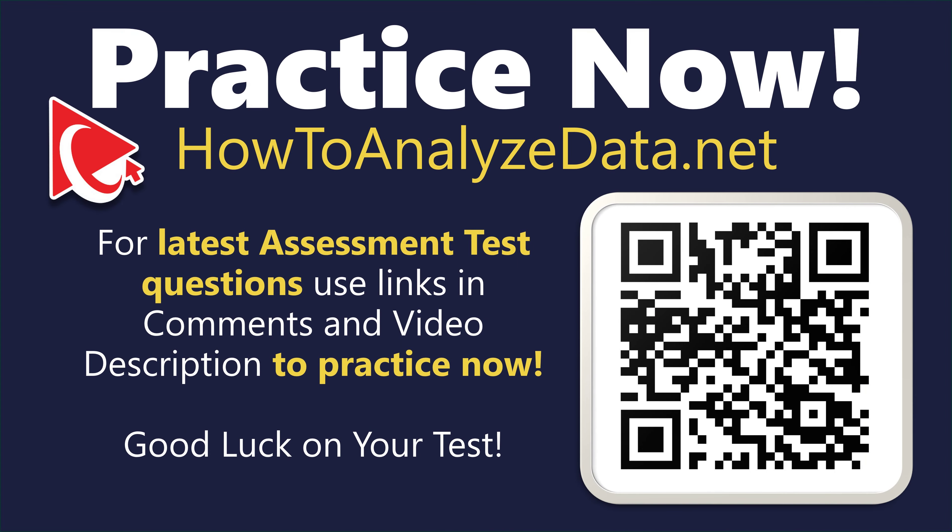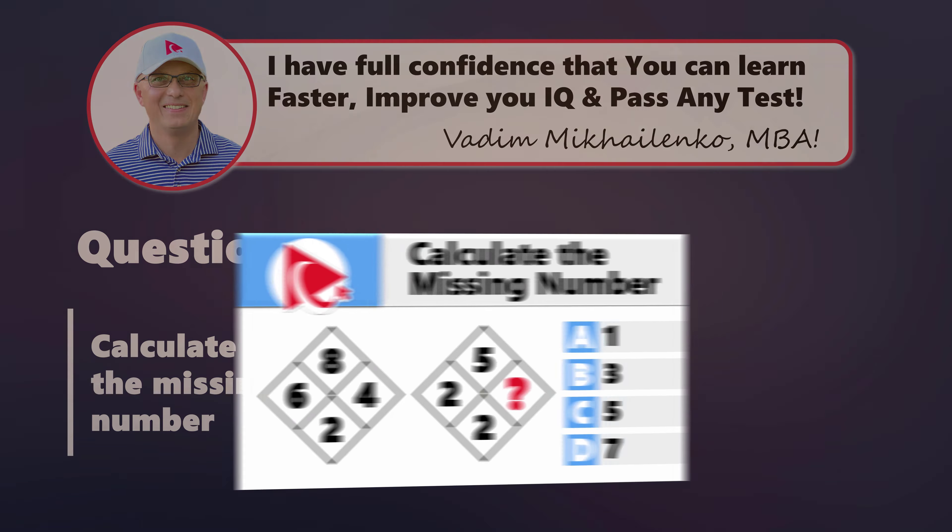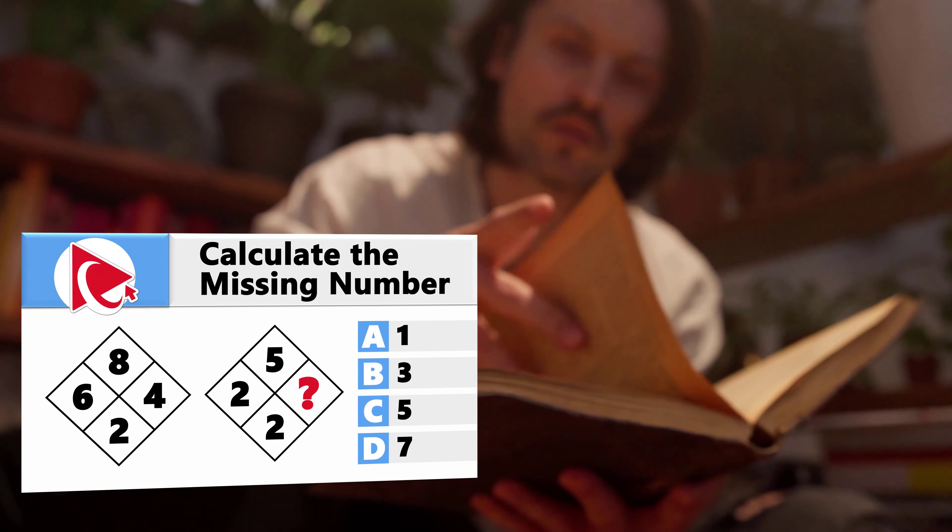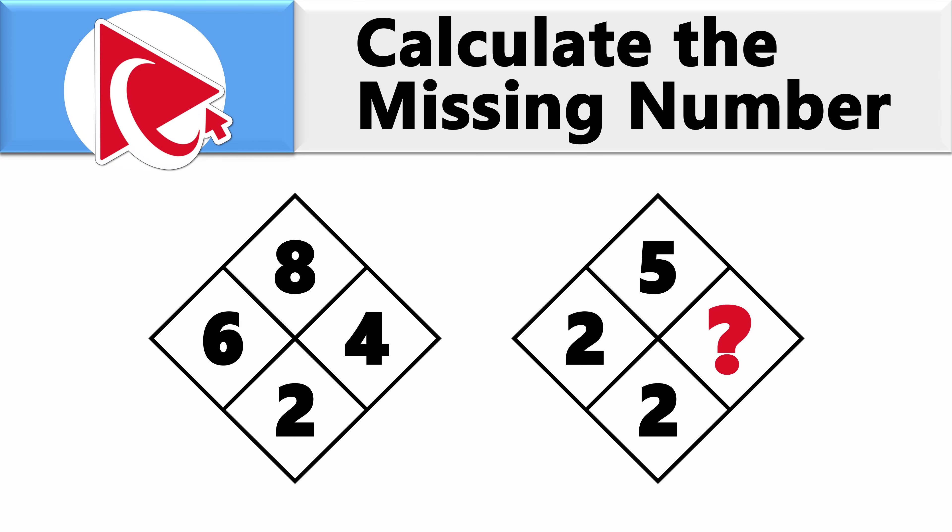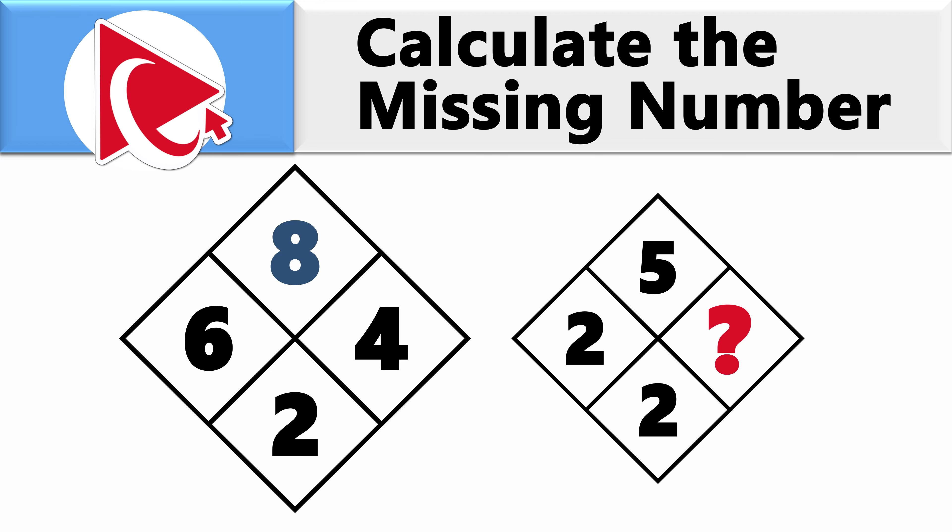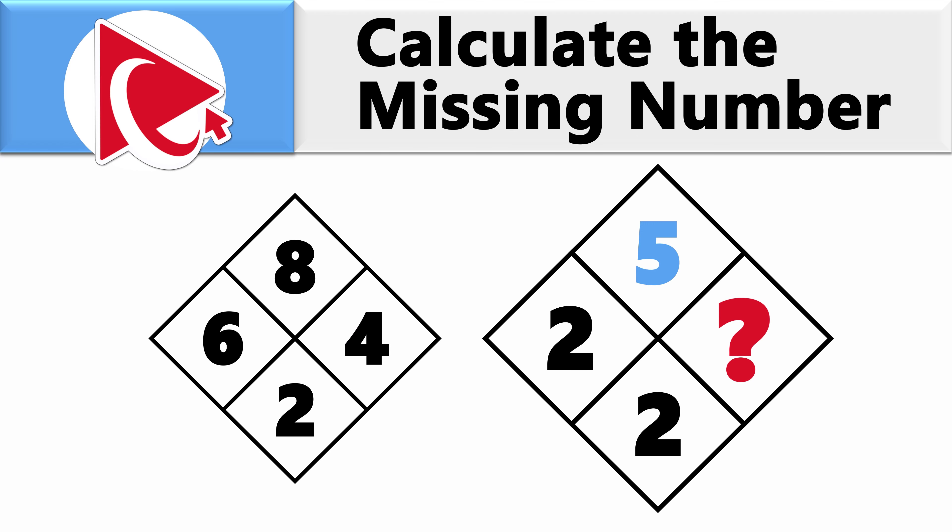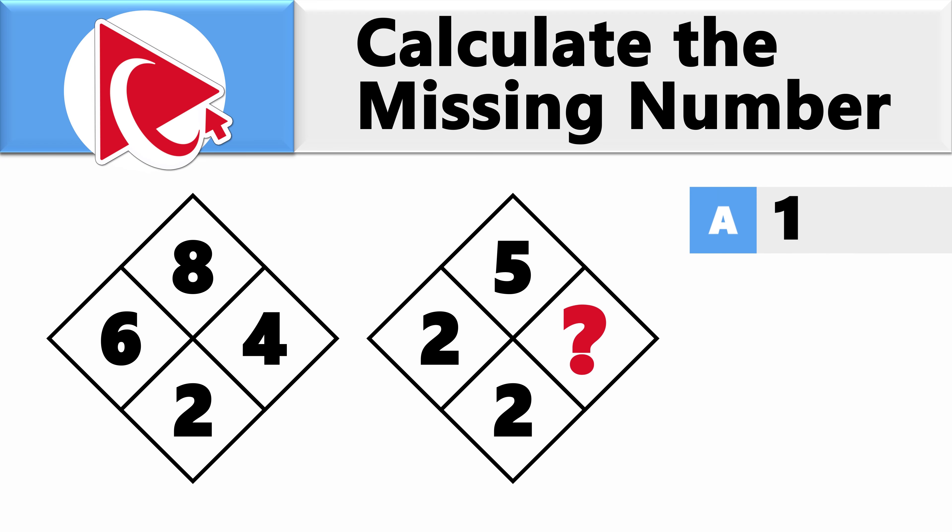And now it's time to grab your thinking goggles. This question is so intricate, Sherlock Holmes would need a cheat sheet. You're presented with two diamonds. Each diamond has four numbers inside. In the first diamond, numbers are 8, 6, 2, and 4. And in the second diamond, numbers are 5, 2, 2, and then comes the missing number, which you need to calculate and select out of four possible choices: A 1, B 3, C 5, and D 7.